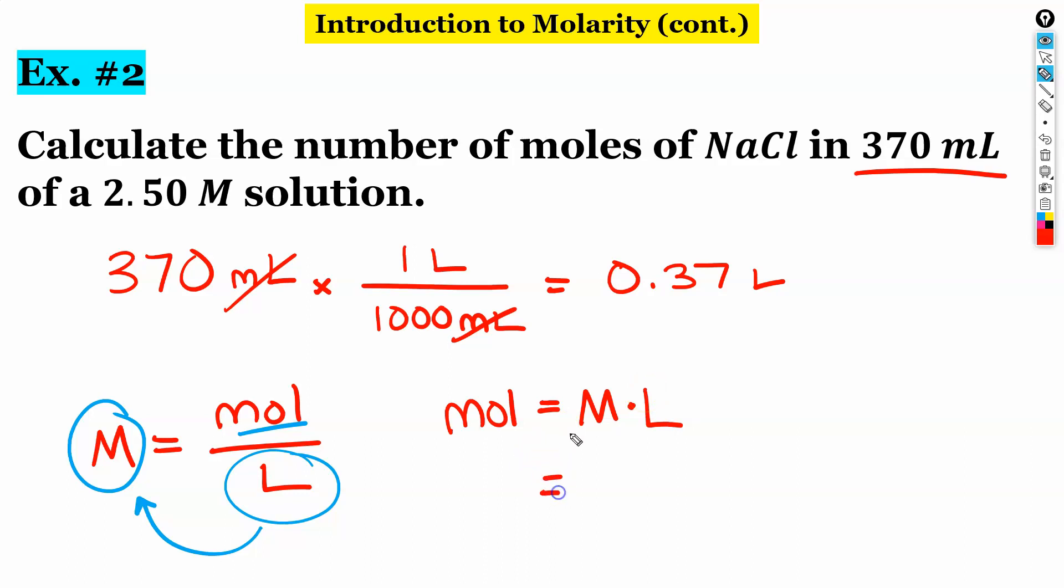So we're finding moles. So capital M molarity, 2.5 molar times 0.37 liters. So my answer would be 0.925. I want 3 significant figures. So this would be 0.93 moles.